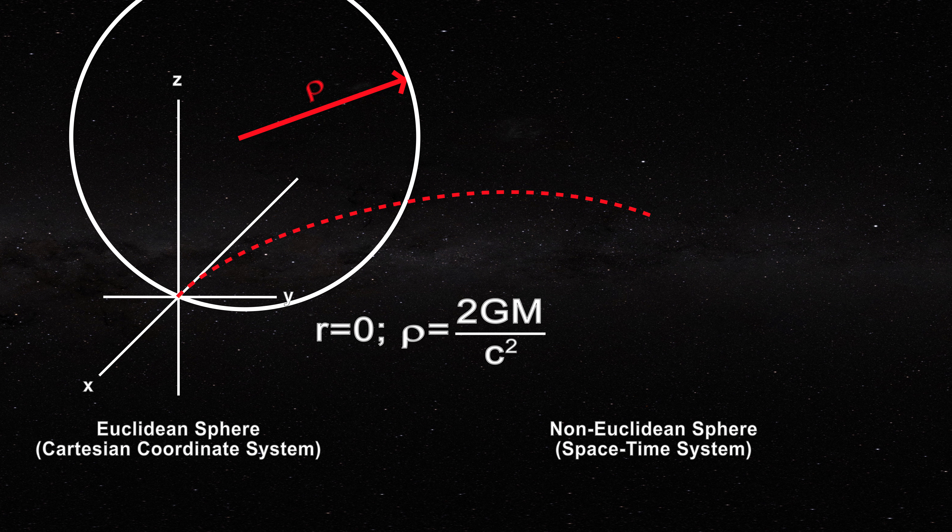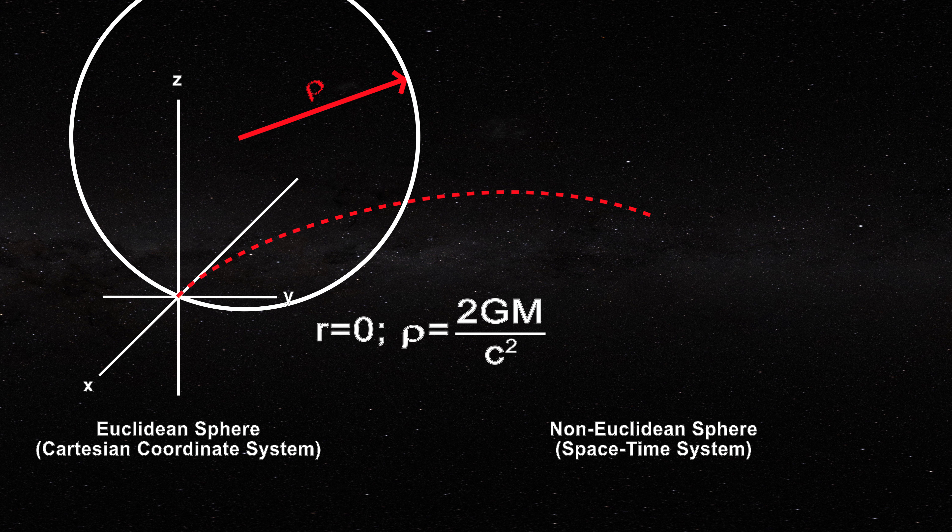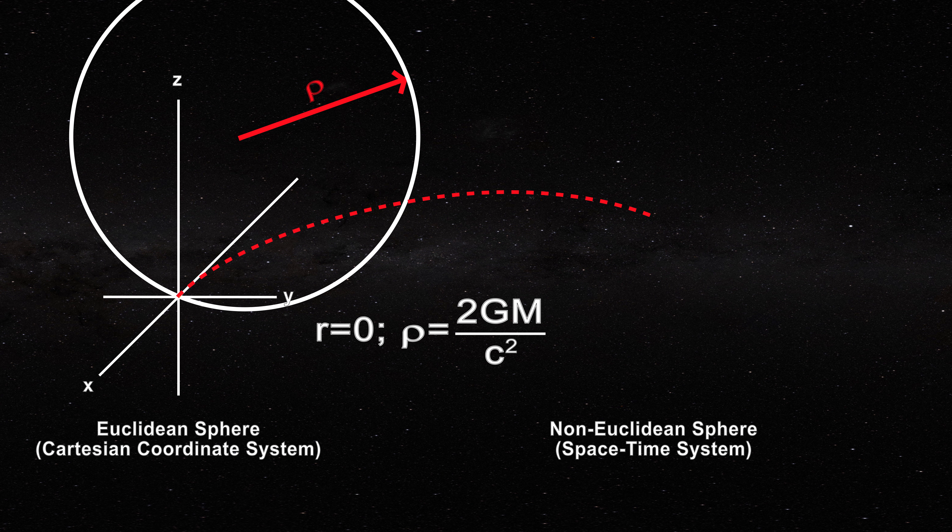Thus, the center of the Euclidean sphere does not correspond to that of the black hole sphere. When rho is zero, the radius of the non-Euclidean sphere must also be zero.